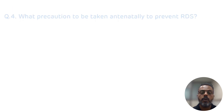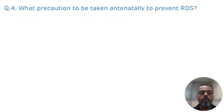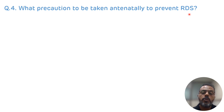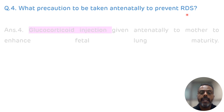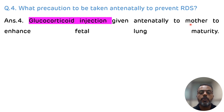Question number 4: what precaution should be taken antenatally to prevent RDS? To prevent RDS, a glucocorticoid injection is given antenatally to the mother to enhance fetal lung maturity.